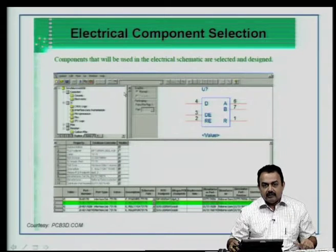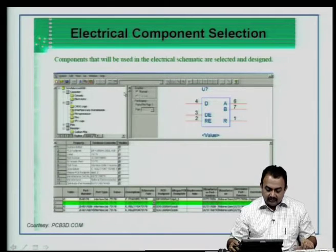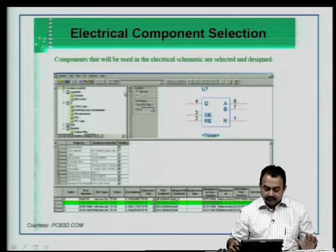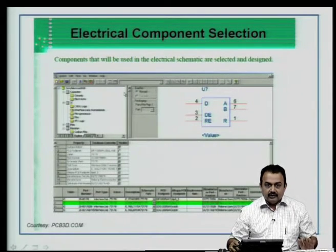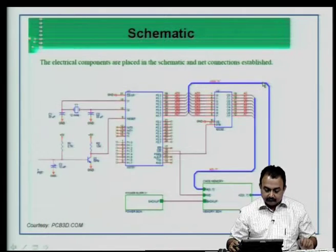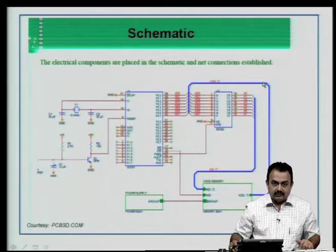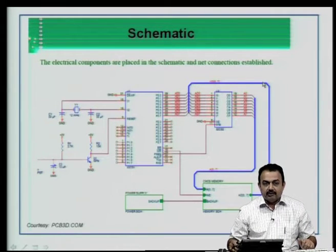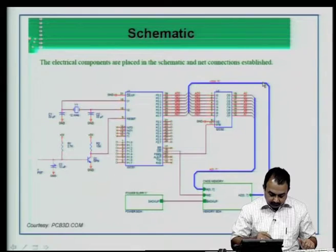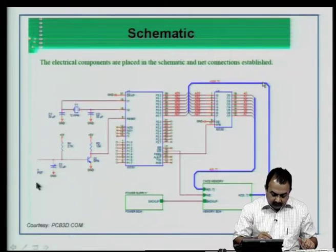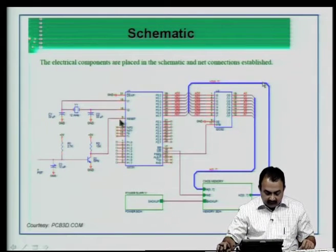The first thing in any CAD process is electrical component selection. Components that will be used in the electrical schematic are selected and designed. You can create a symbol and an equivalent footprint because this is going to be used in the electrical schematic page. The electrical components are placed in the schematic screen and the net connections between components are established. You can have about 100 components placed — actives and passives — and they are interconnected, completing the schematic part of the CAD program.